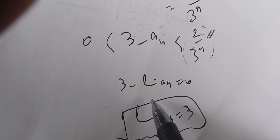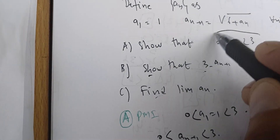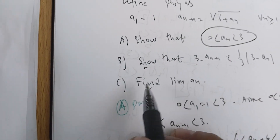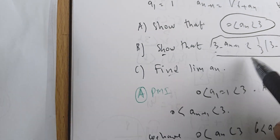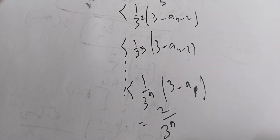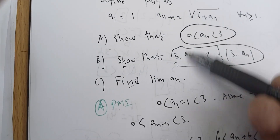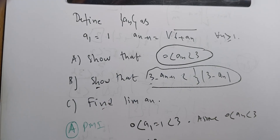To summarize: we proved the bound 0 < aₙ < 3 using mathematical induction, used algebra with conjugates to establish the contraction inequality 3 − aₙ₊₁ < (3 − aₙ)/3, applied this result successively back to a₁, and finally used the squeeze theorem to conclude that the limit of aₙ is 3.